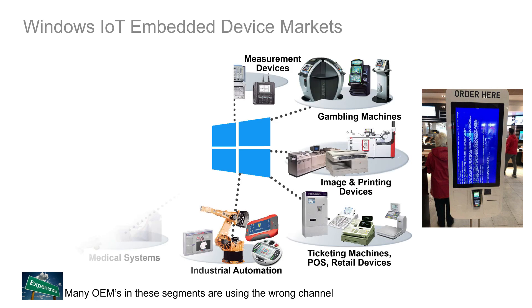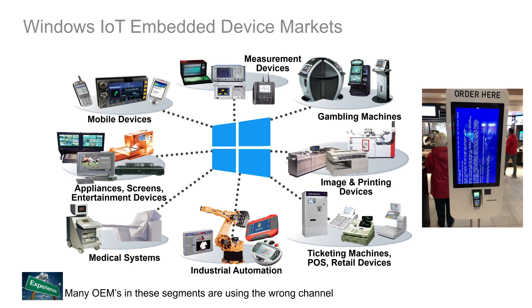In the IOT channel — which stands for Internet of Things — it used to be called the embedded OEM embedded channel. It's now the OEM IOT channel. I still use the word 'embedded' because a lot of people are still familiar with that term, and some older products still have it in the name. But for Windows 10, it's Windows 10 IOT.